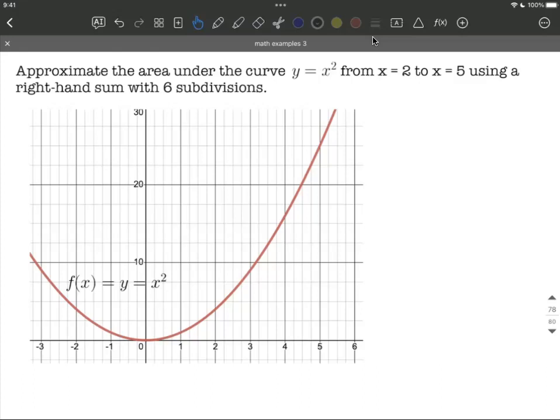So as we take a look at this, let's first go ahead and think about—I've given you the graph here so we can take a visual look at exactly what's going to happen. We're looking at x values of 2 through 5.